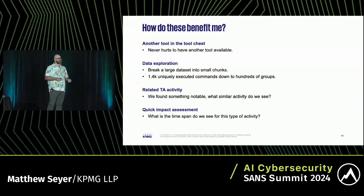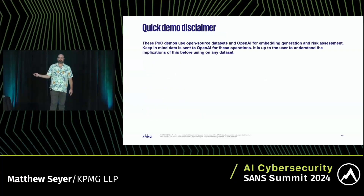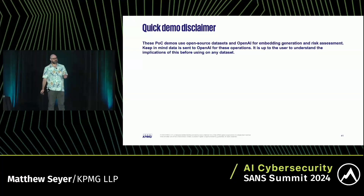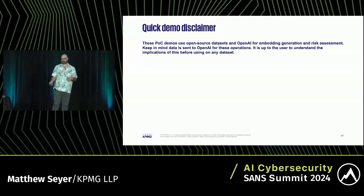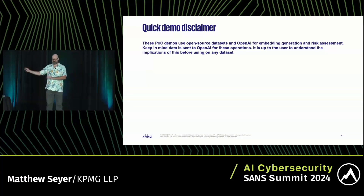What's neat about that is you can quickly answer questions like, 'For the data I have, what's the time range that this type of activity has been going on?' Quick demo disclaimer before we jump in: this is sending data to OpenAI for these proof-of-concept tools, so be careful when you use it. I don't recommend using it on your client data, but there are open-source data sets you can use it on.